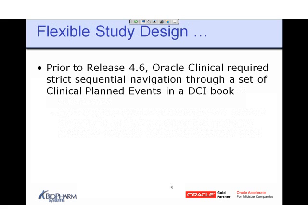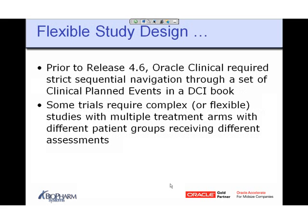What is flexible study design? Prior to Release 4.6, Oracle Clinical required strict navigation to a set of defined pages, visits, and events listed in something called the DCI book. Some trials require complex or flexible studies — they may have different treatment arms, different patient groups, or a treatment arm determined upon data entered for the patient in screening or subsequent visits. You make an assessment: should you continue the study, go to another treatment arm or regimen, or terminate from the study?